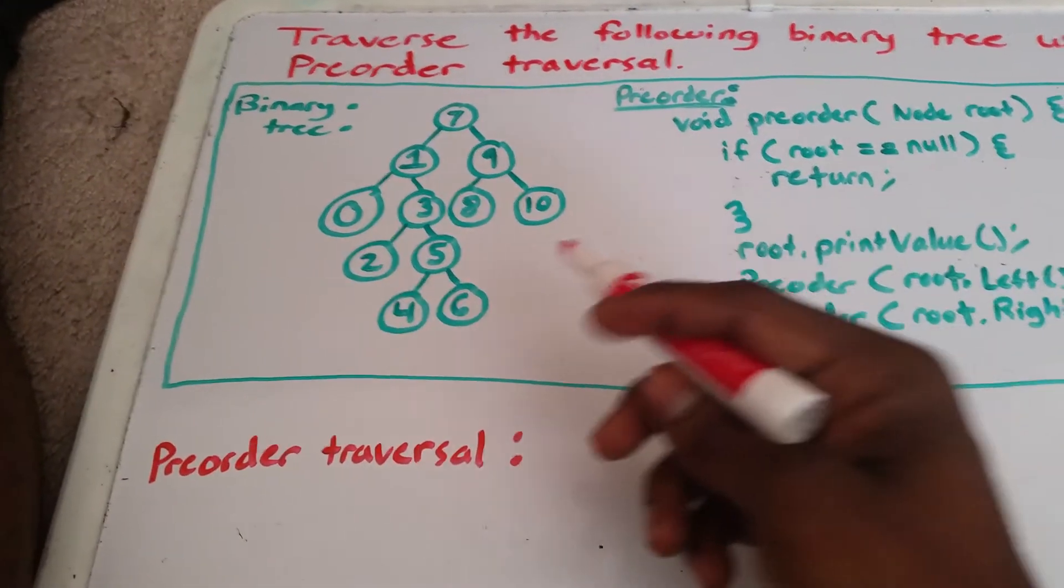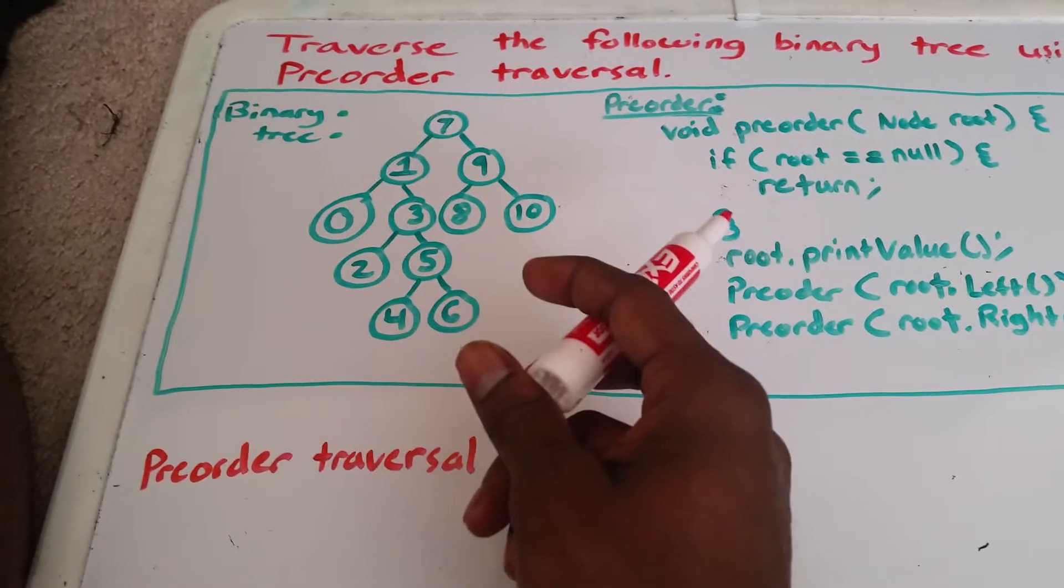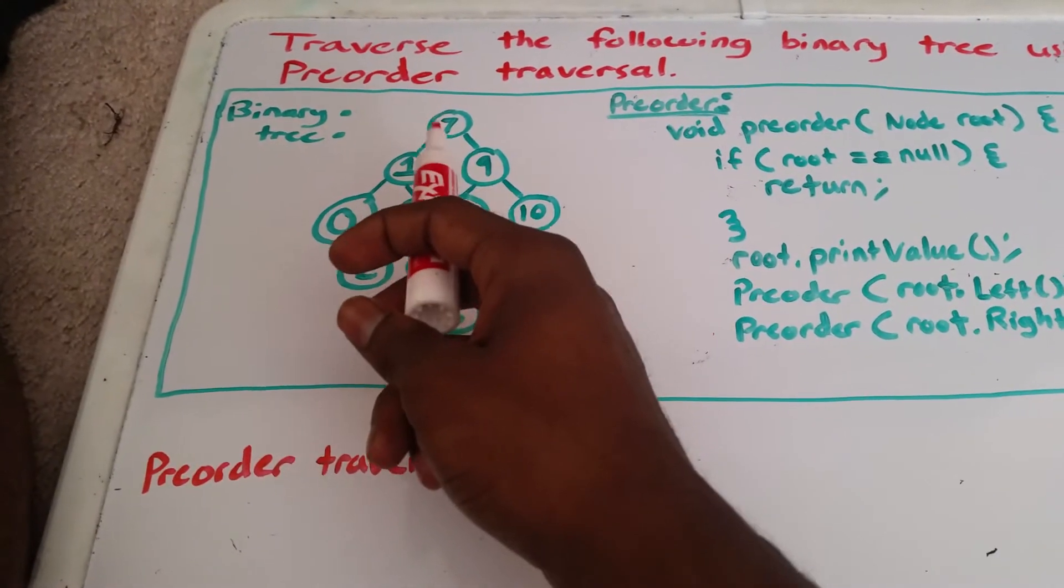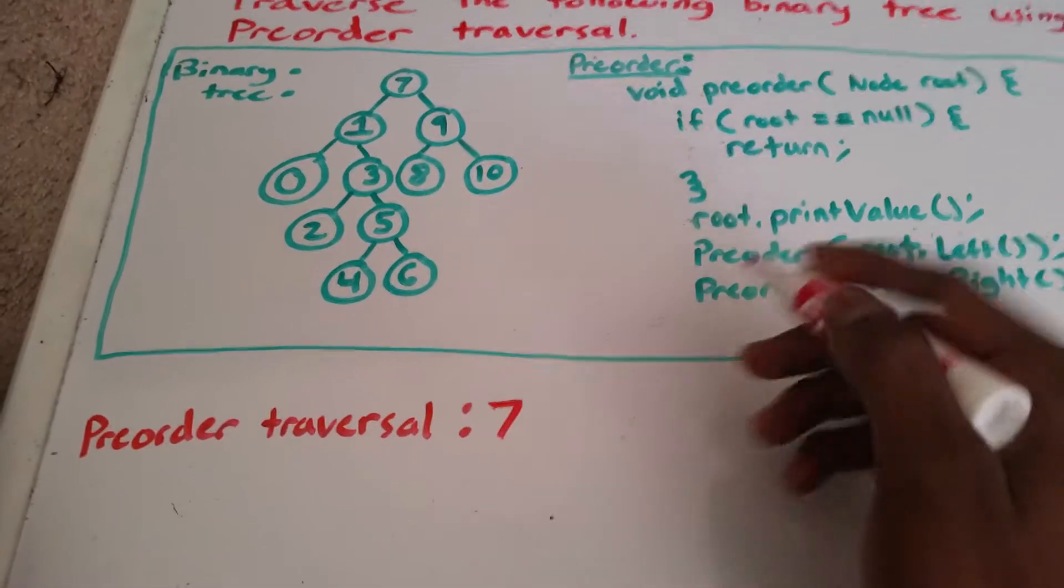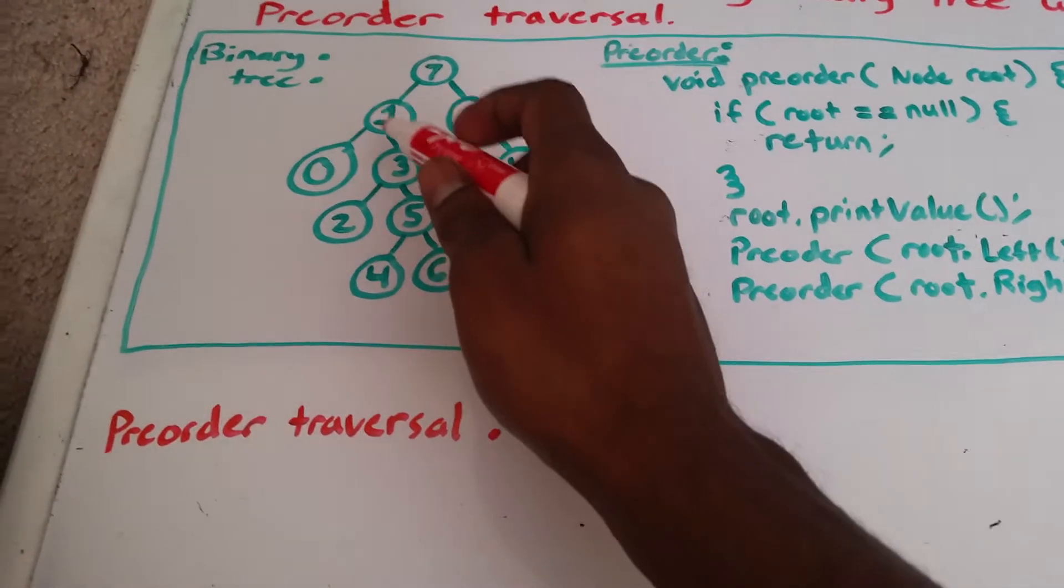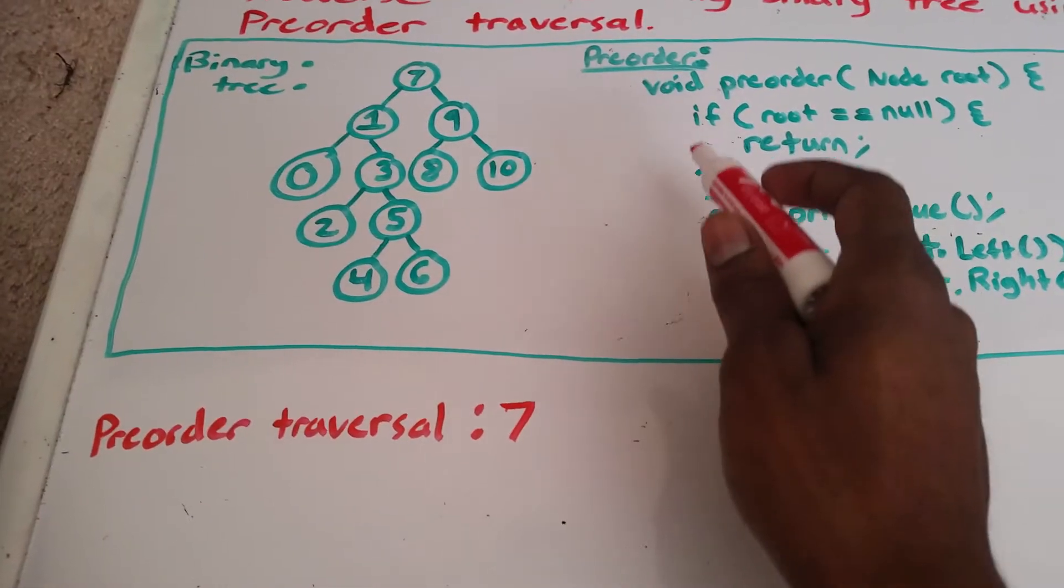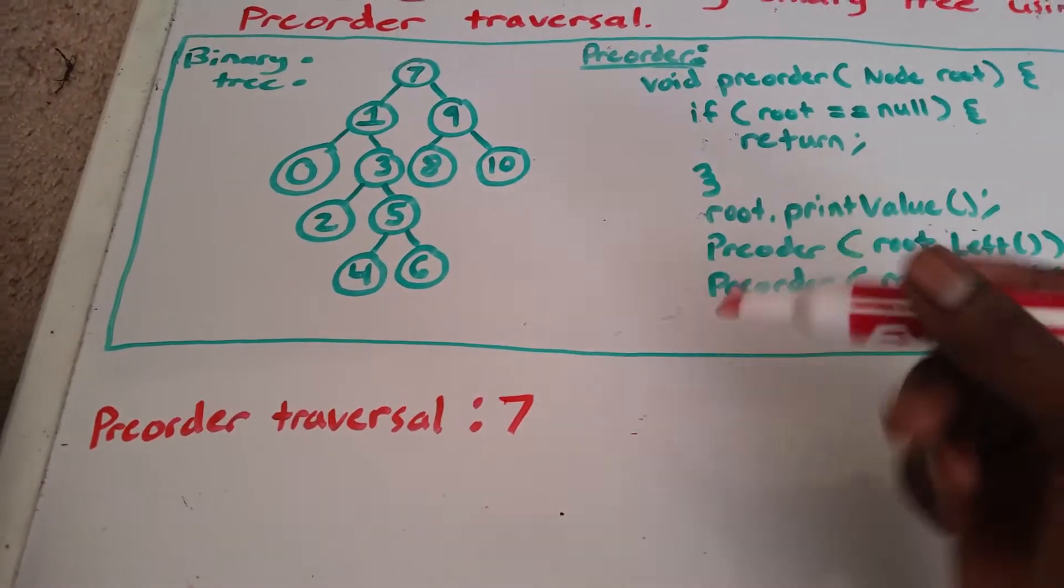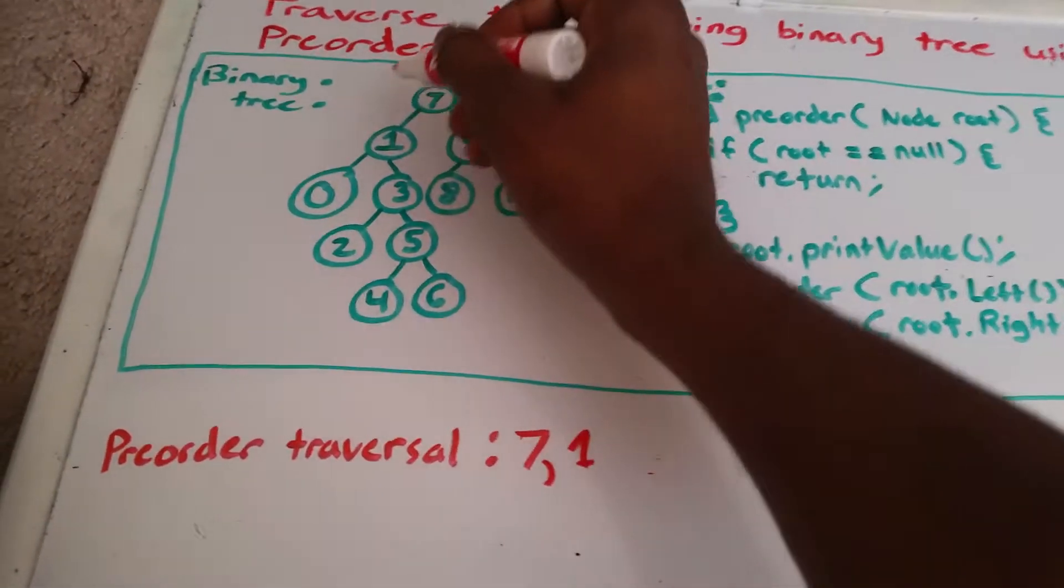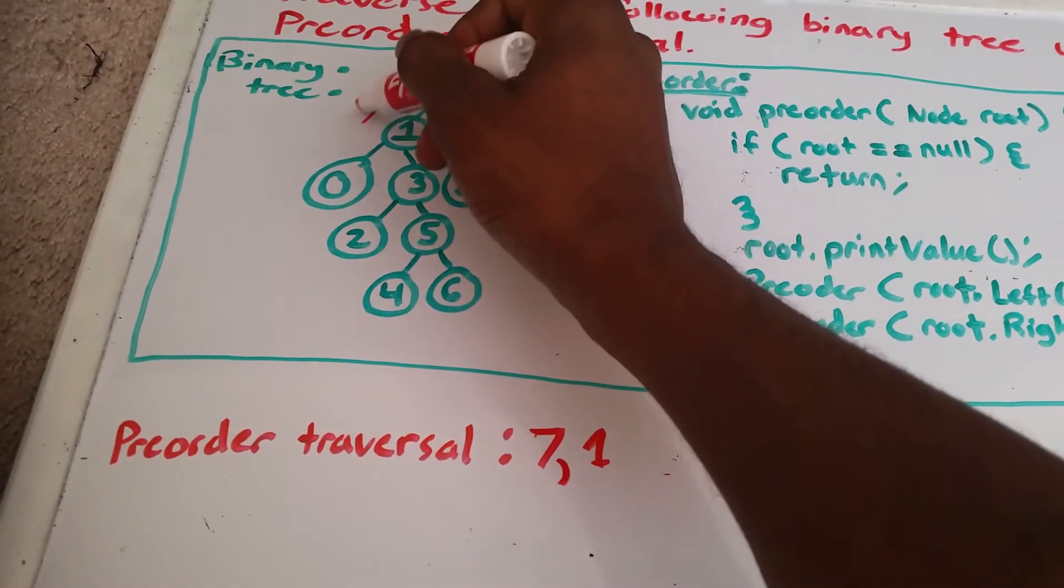So first thing our code says is to print the root. So our root is 7, so we go ahead and we print it. Then we're going to go left, and we check to see if it's null, it's not, it's 1, and we print the value. And let me go ahead and mark this off as we go.